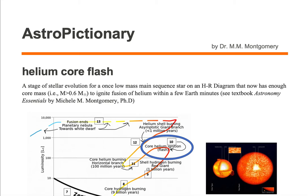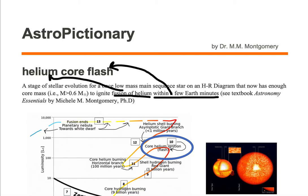The helium core flash is a stage of stellar evolution for a low-mass main sequence star on an HR diagram that now has enough core mass — i.e., mass greater than 0.6 solar masses — to ignite fusion of helium within a few Earth minutes. This fusion event gives us the 'flash' because it's a stage that only lasts a few Earth minutes, and because we're fusing helium in the core, it's called the helium core flash.